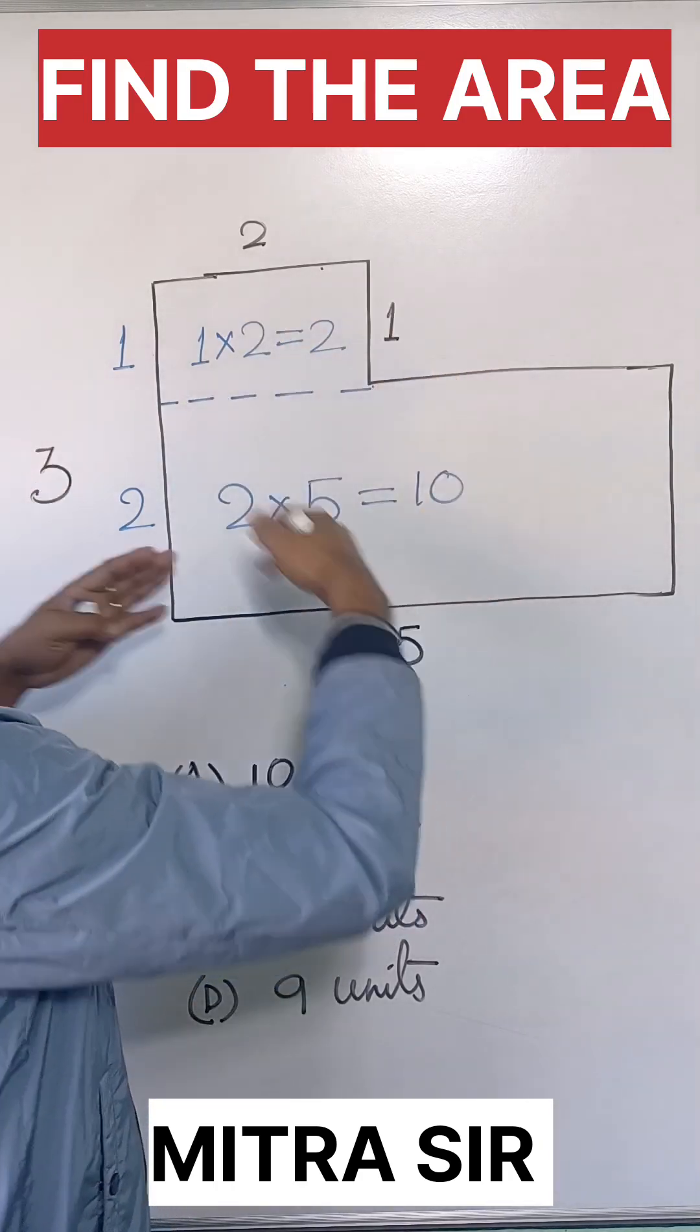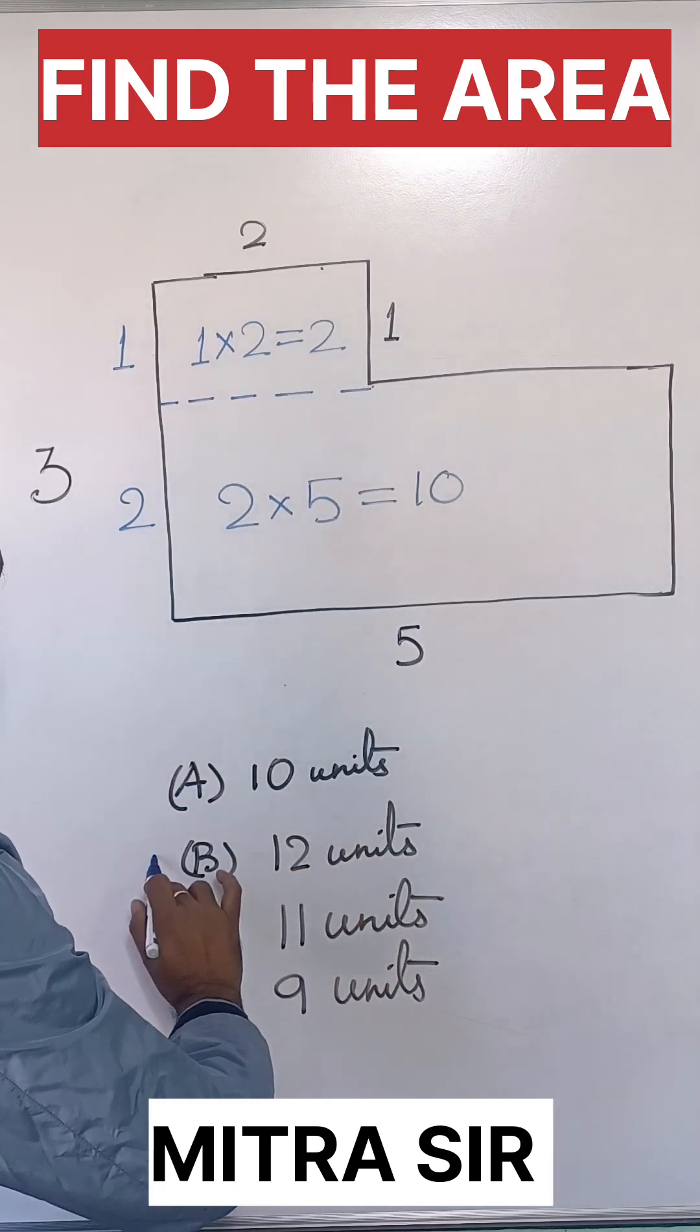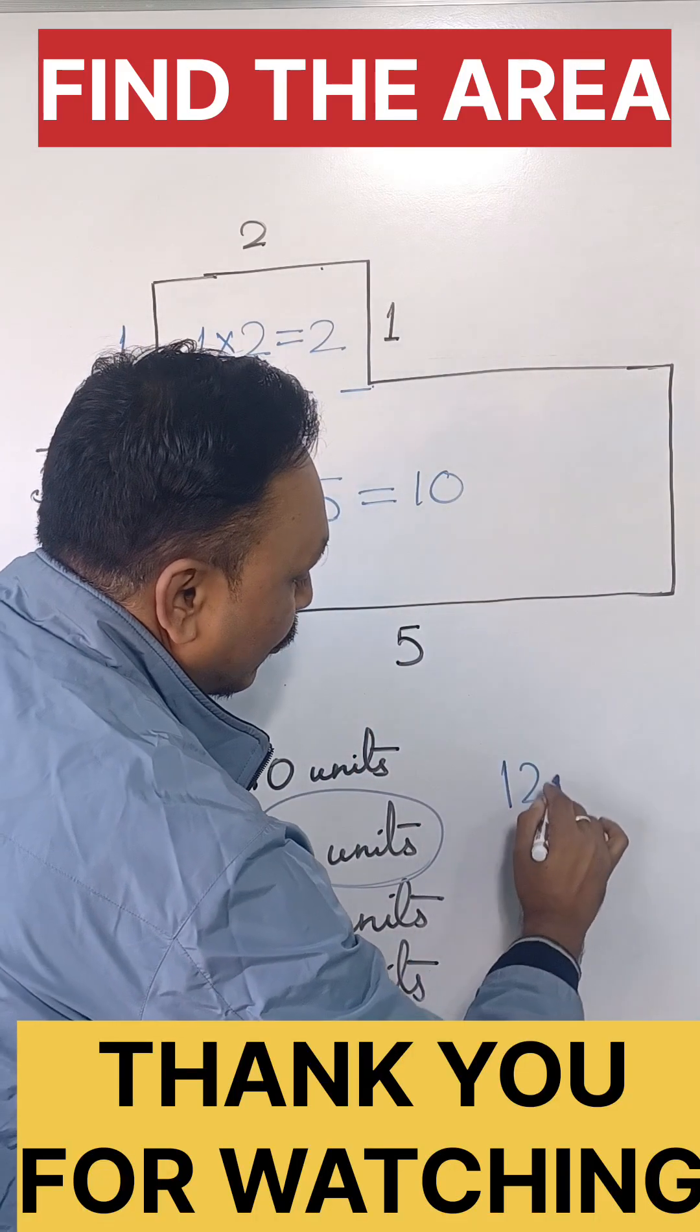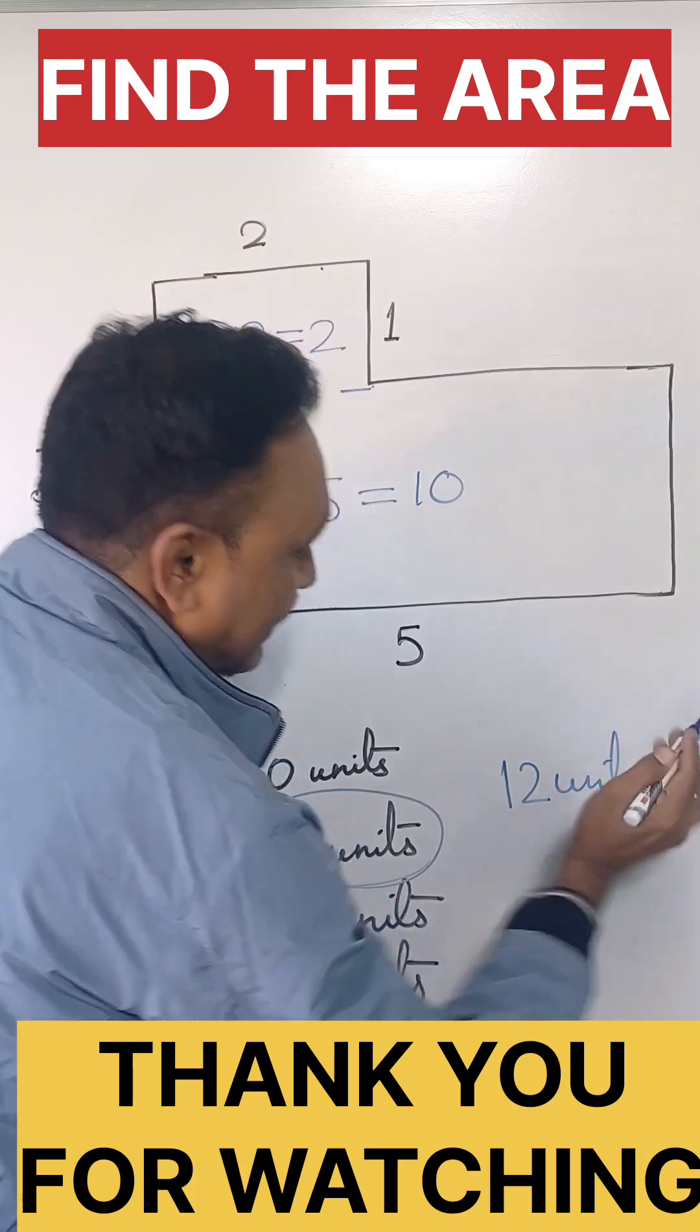So here 10 plus 2 equals 12. So the total area is 12 units. This is the correct answer.